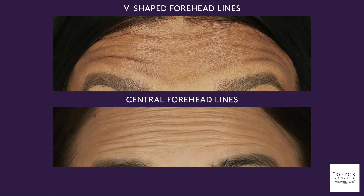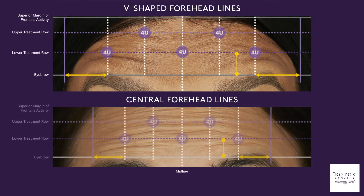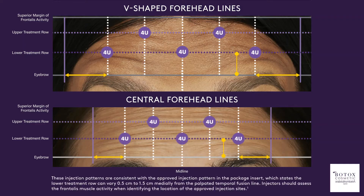The images of V-shaped and central forehead line patterns highlight the variations in corresponding injection sites with Botox Cosmetic. These injection patterns are consistent with the approved injection pattern in the package insert, which states the lower treatment row can vary 0.5 cm to 1.5 cm medially from the palpated temporal fusion line. Injectors should assess frontalis muscle activity when identifying the location of the approved injection sites.